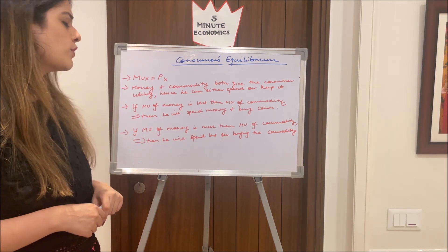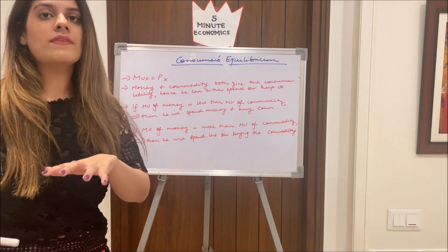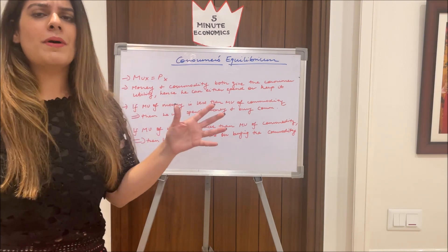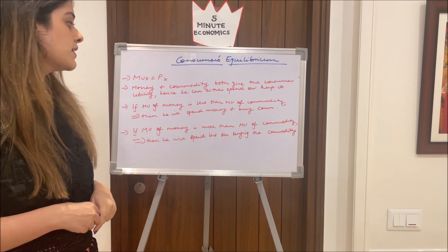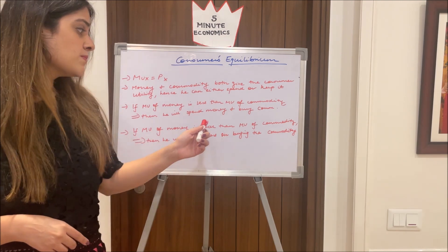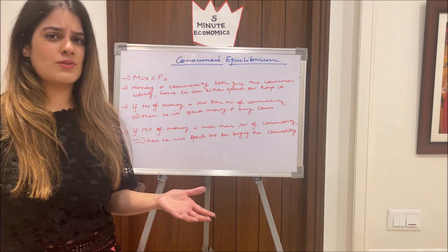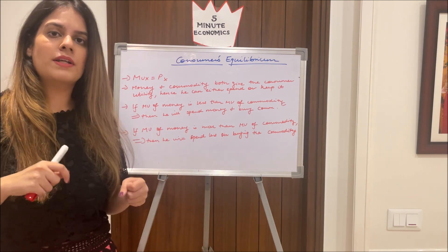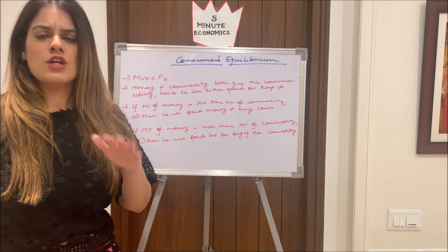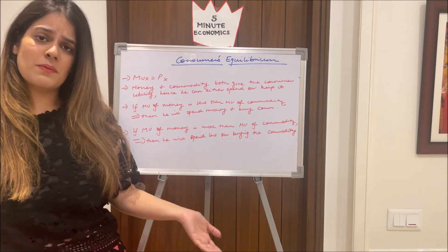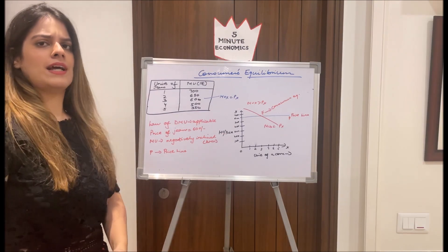There are three scenarios. First: if MU of the commodity is greater than MU of money, the consumer will spend and buy — wearing that shirt to a party gives more satisfaction than keeping the money. Second: if MU of money is greater than MU of the commodity, the consumer holds back — the shirt isn't worth the price. Third: MUx equals Px — consumer's equilibrium. These three conditions cover all cases.